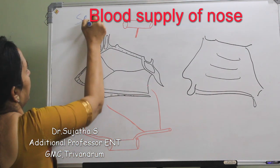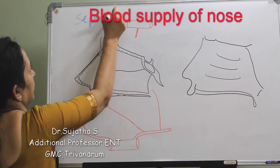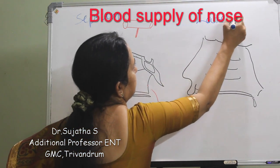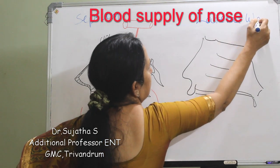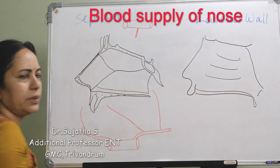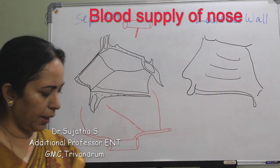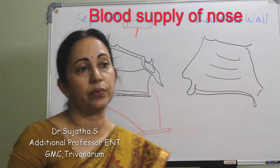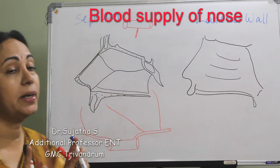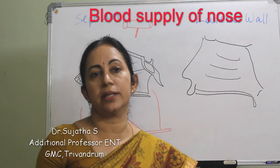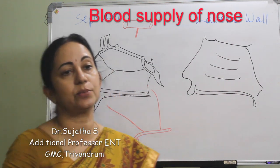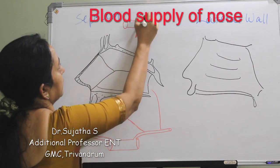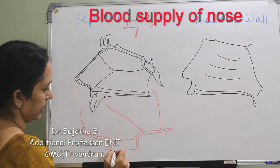So this is the blood supply of septum and lateral wall. Both are almost the same and we are getting supply from both the internal carotid artery and also from the external carotid artery. But remember that there is no anastomosis between the internal carotid system and the external carotid system.